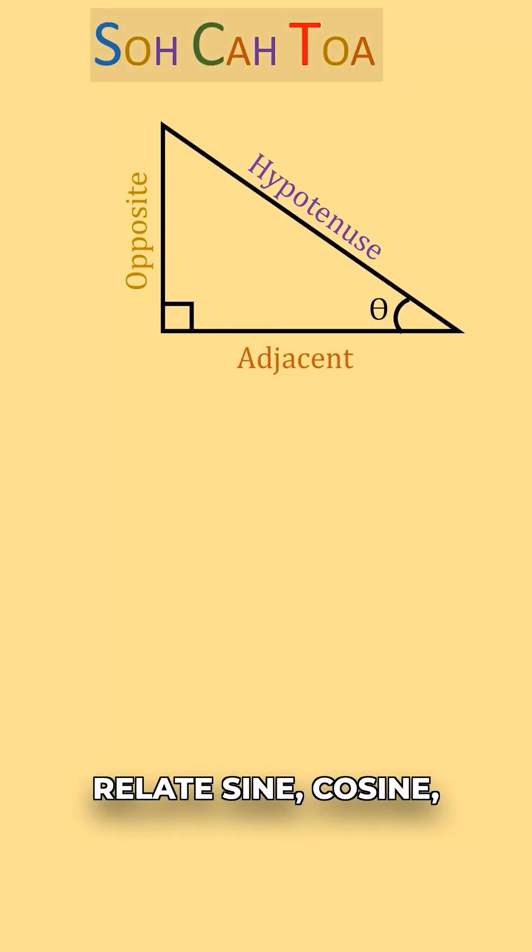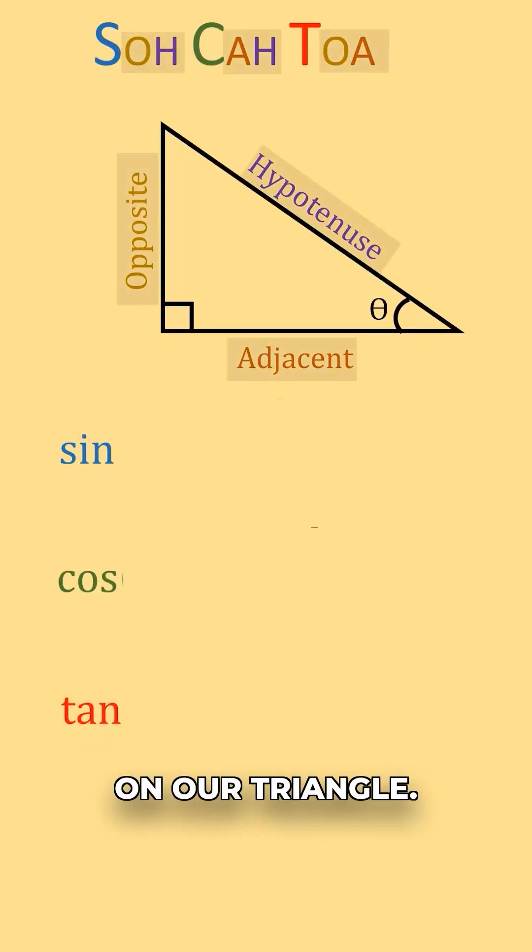And so Sokotoa helps relate sine, cosine, and tangent to these sides that we just labeled on our triangle.